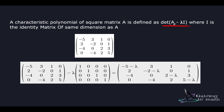We substitute this matrix into the equation A minus lambda times I, where I is the identity matrix of the same dimension. Since this is a 4x4 matrix, the identity matrix is also 4x4. Lambda gets multiplied with all diagonal entries — which are 1 — and subtracted from the diagonal entries of the original matrix. So the diagonal entries become: minus 5 minus lambda, minus 2 minus lambda, 2 minus lambda, and 5 minus lambda.